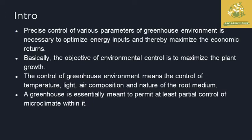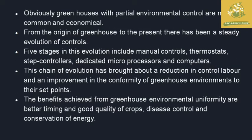There are precise control parameters used in controlling the greenhouse environment to maximize economic returns from crops. The objective of environmental control is to maximize plant growth to get economic yield. Control of the greenhouse environment means control of temperature, light, air composition, and the nature of root medium for a particular crop to obtain maximum yield. The greenhouse is essentially meant to permit at least partial control of the microclimate within them, and most greenhouses have partial environmental control, which is more common and economical.